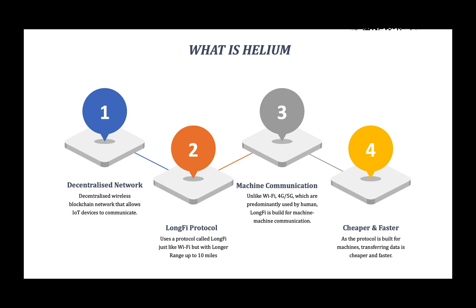Traditionally IoT devices use Wi-Fi, which has a short range, or they use telecommunication companies, which are very expensive — 2G or 3G networks. This is where Helium comes in, as it has a much more extended range and is much cheaper to transmit data over the Helium network compared to using the telecom network.